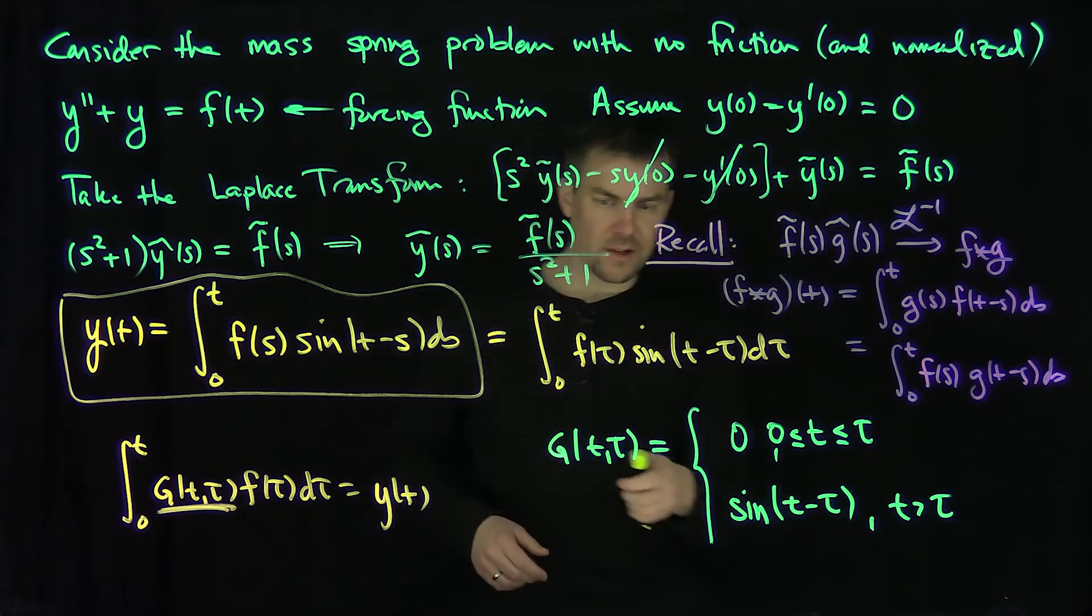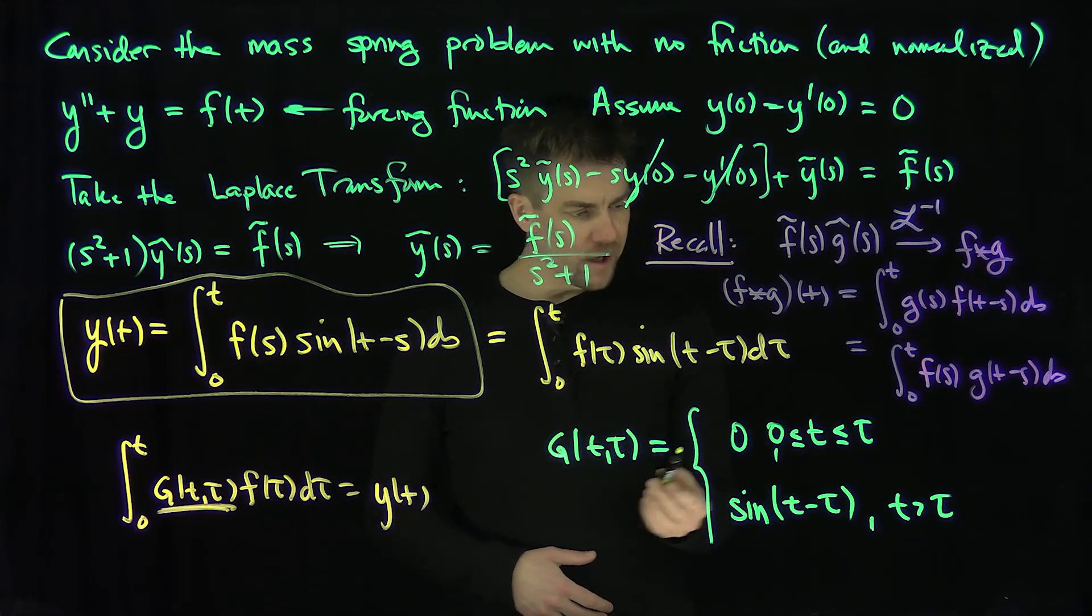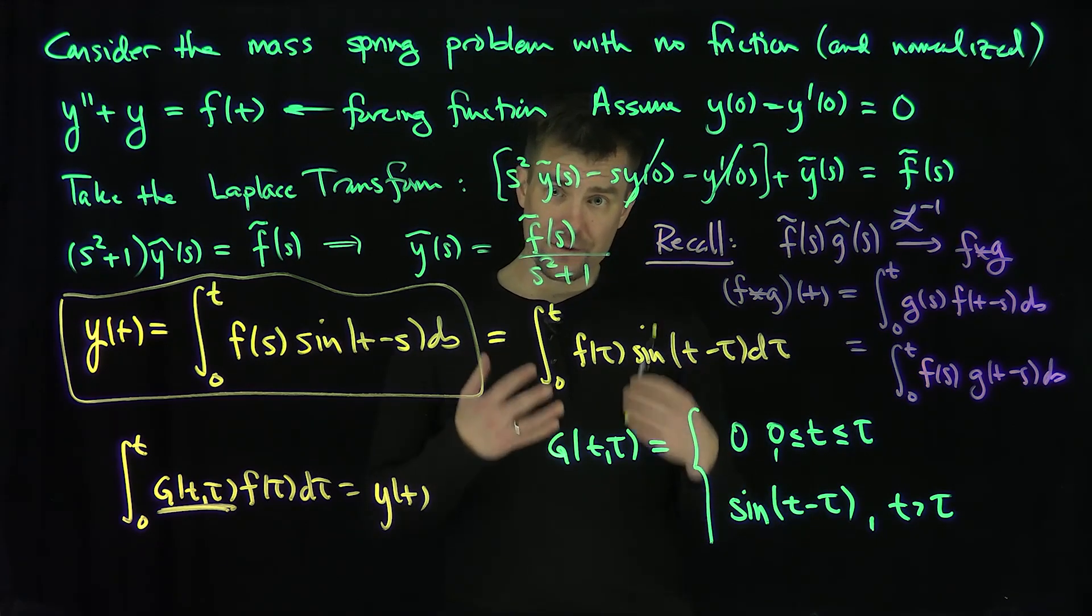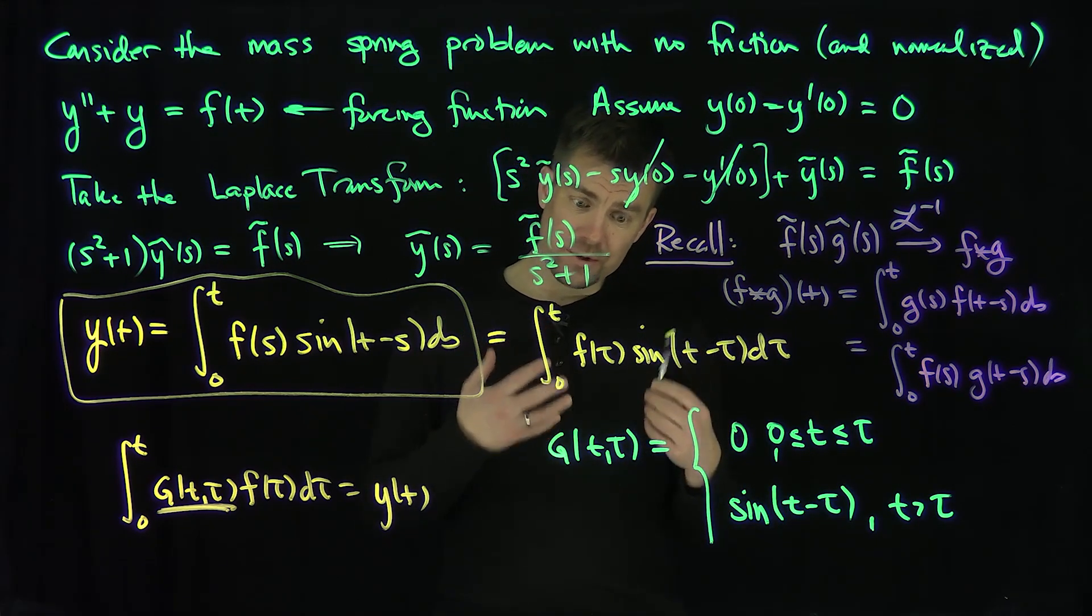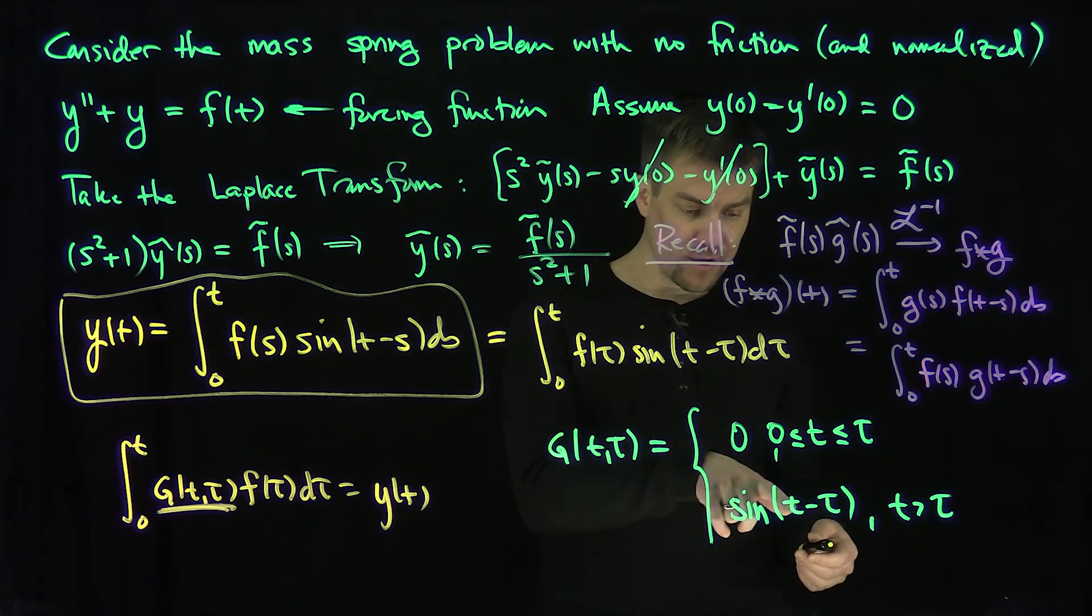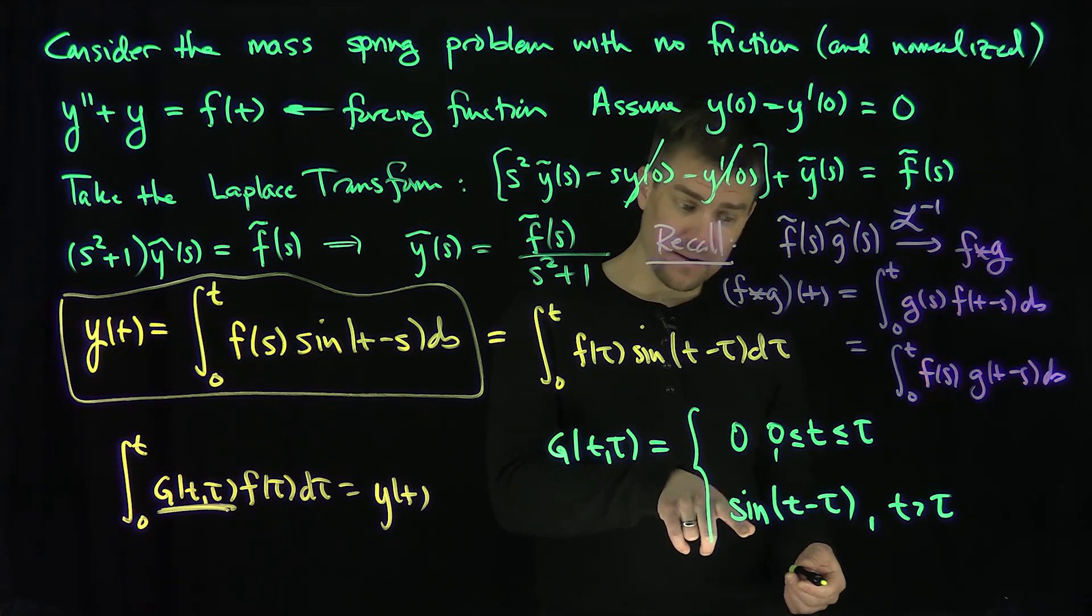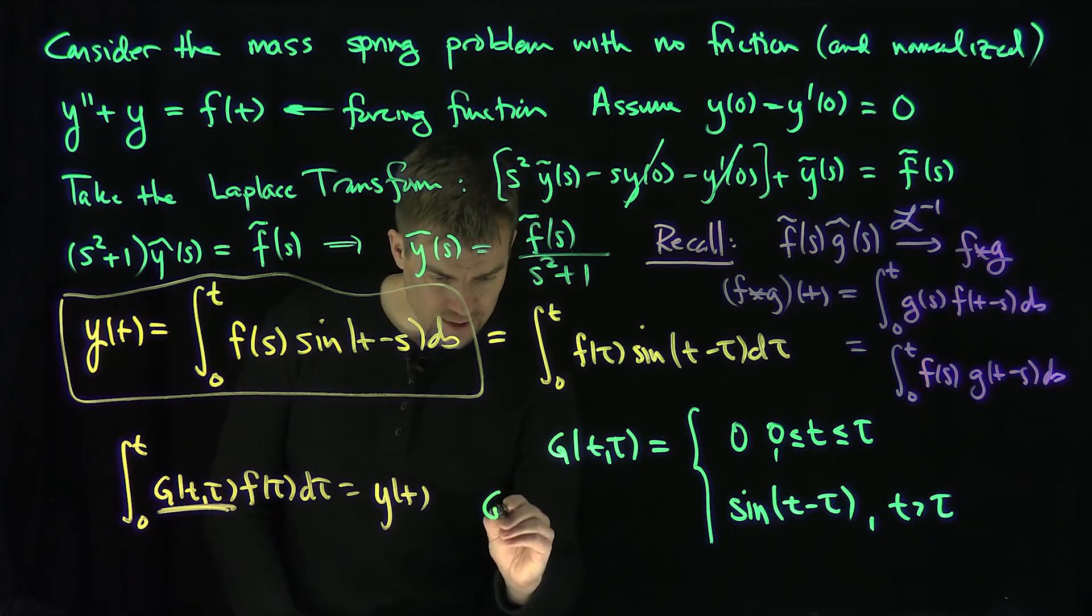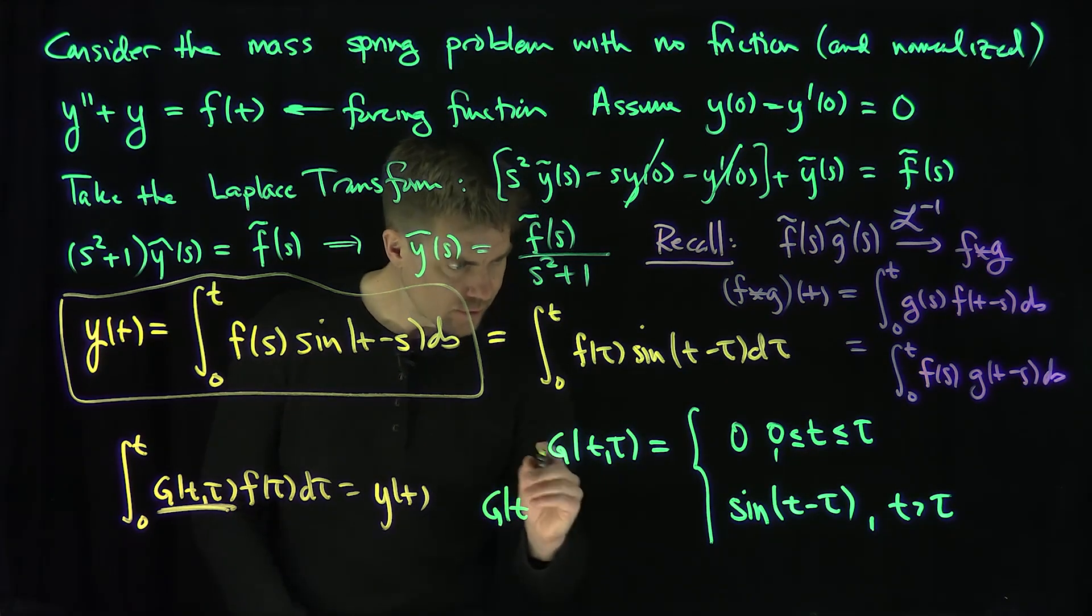And of course, we can easily check when I plug in t equals tau to this problem, I get 0 over here and 0 over here, so the Green's function on the diagonal is equal to 0, and then the derivative of the Green's function diagonal, the derivative of the sine is going to be cosine, and then the cosine when I plug in this is going to be a 1.